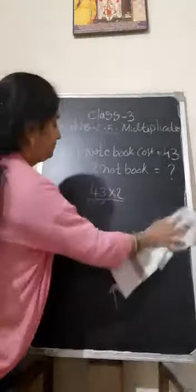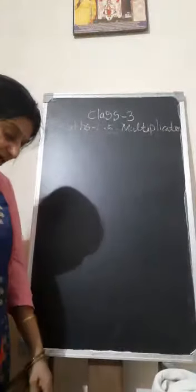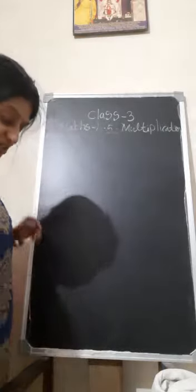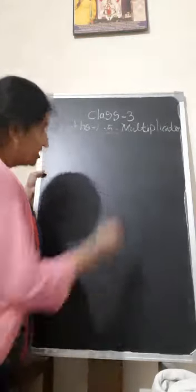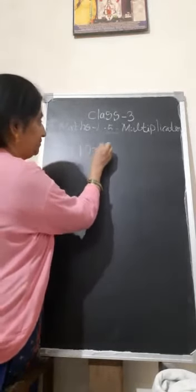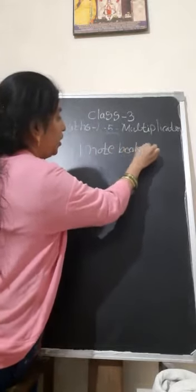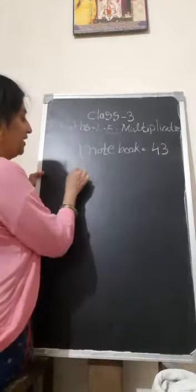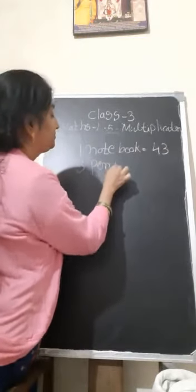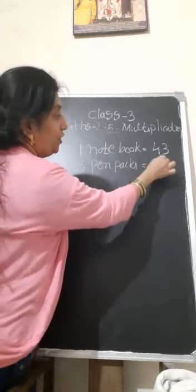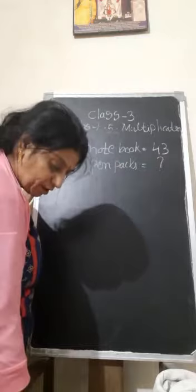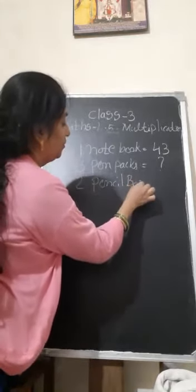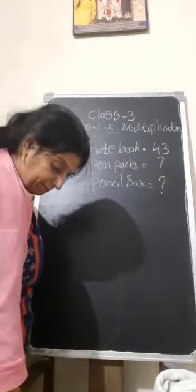Next one, what is there? Saumya purchased one notebook, three packs of pen, two packs of pencils. What she is buying? Saumya is buying one notebook, how much? 43 rupees. And packs of pens, three packs of pens, three pen packs. We don't know how much she has to pay for that. And two packs of pencil, two pencil box. We don't know how much she has to pay. Packs of pencil.